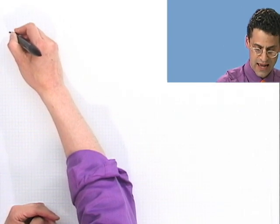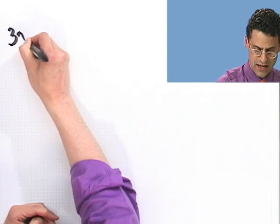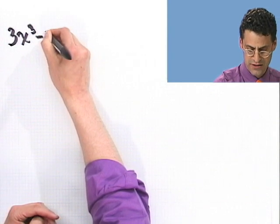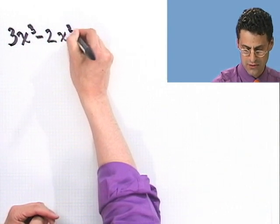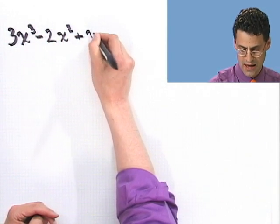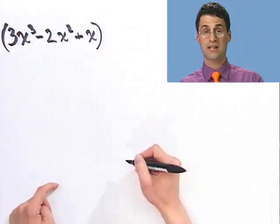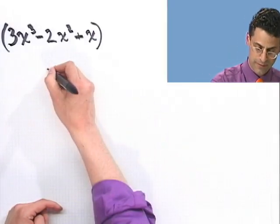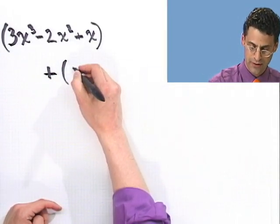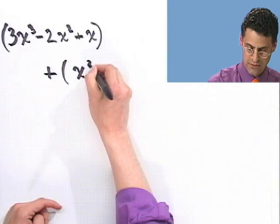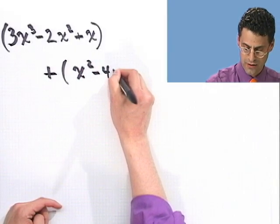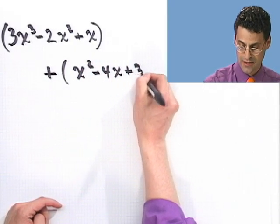Suppose I say, let's add 3x³ - 2x² + x. And I want to add that polynomial, that's a polynomial in and of itself, to the following polynomial: x² - 4x + 3. How should we add polynomials? Well the trick is just to combine the terms that are alike, combining like terms.